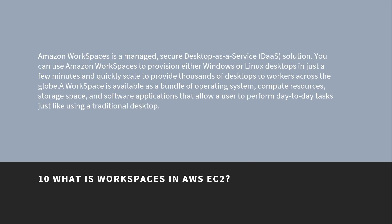What is Amazon Workspaces? Amazon Workspaces is a managed, secure desktop-as-a-service solution. You can use Amazon Workspaces to provision either Windows or Linux desktops in just a few minutes and quickly scale to provide thousands of desktops to workers across the globe. A workspace is available as a bundle of operating system, compute resources, storage space, and software applications that allow a user to perform day-to-day tasks just like using a traditional desktop.